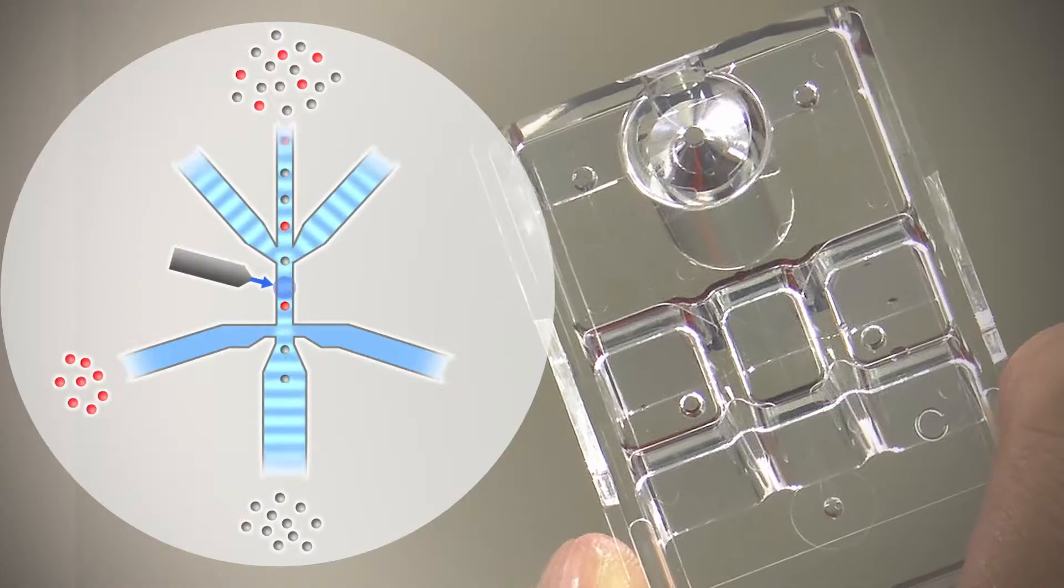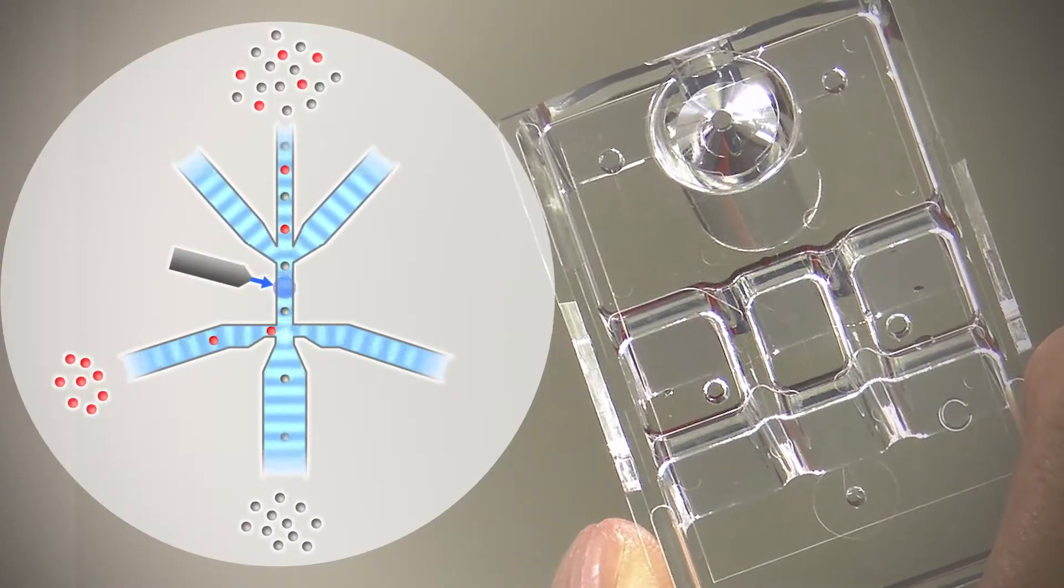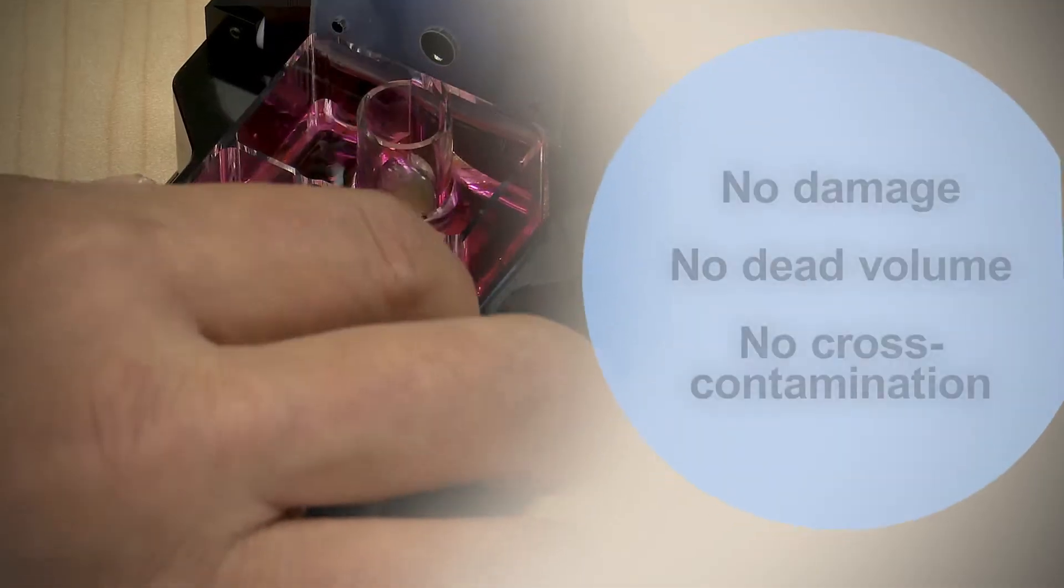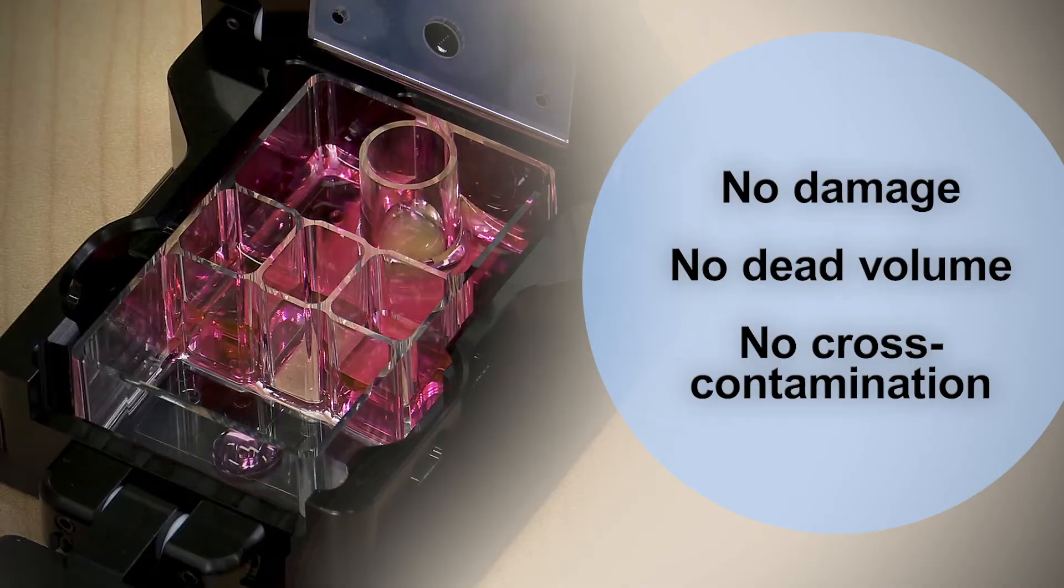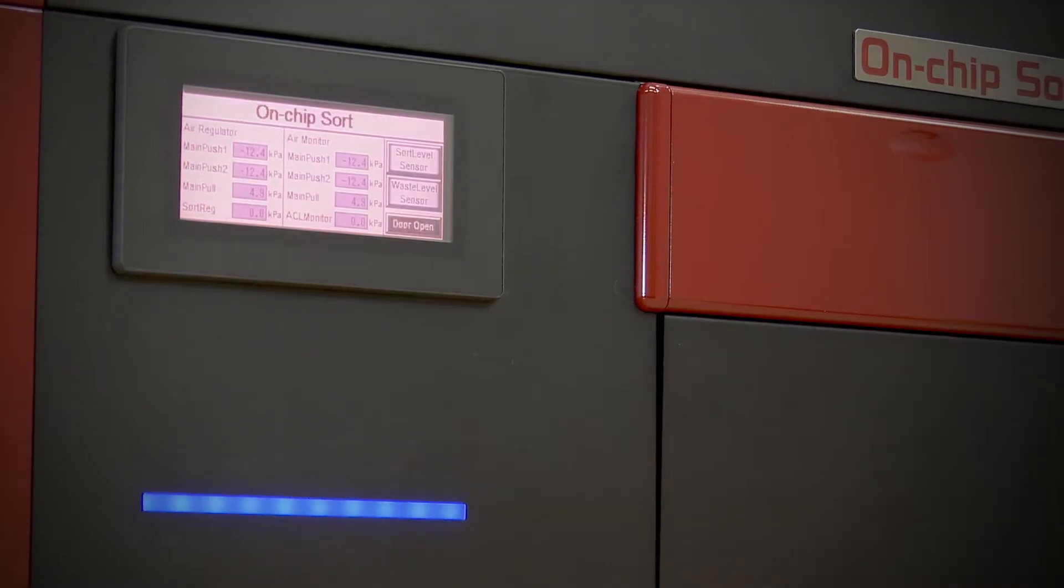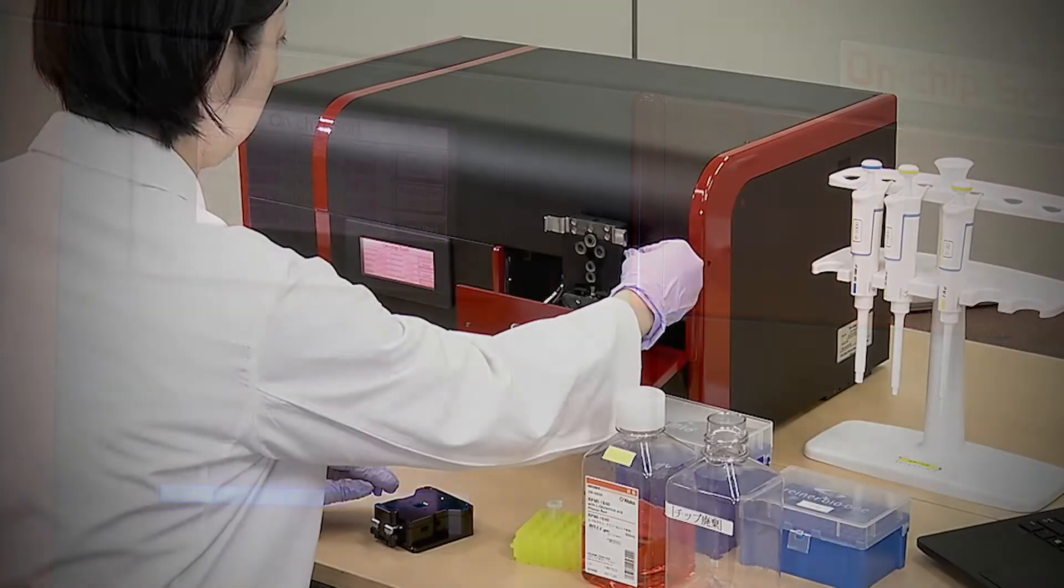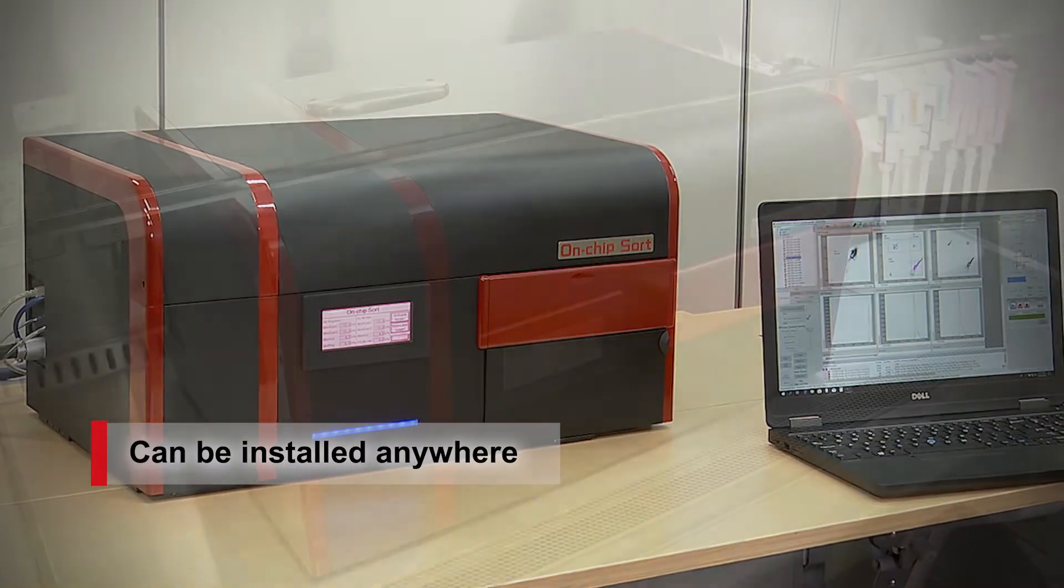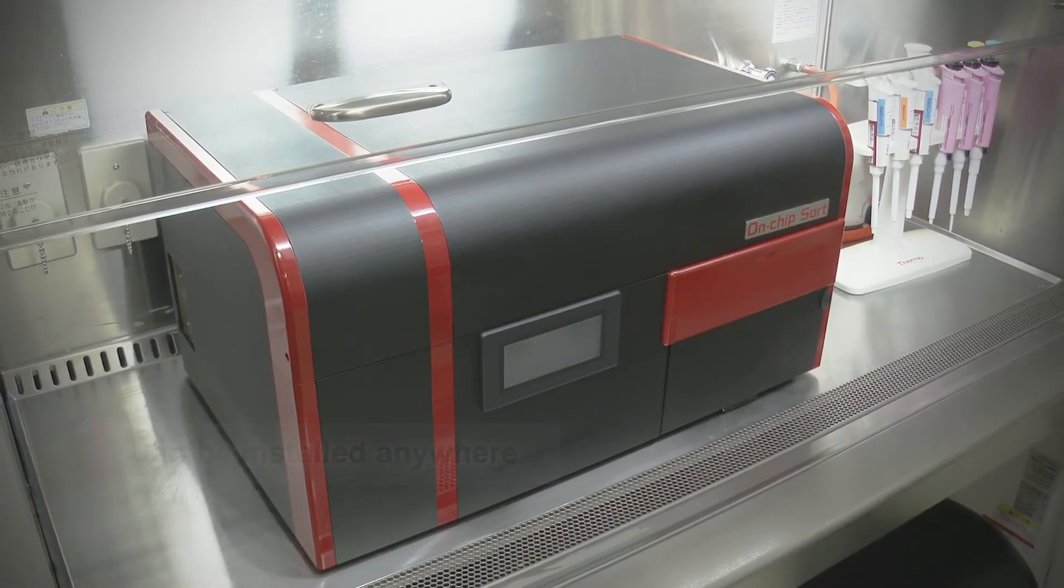On-chip Sort enables contamination-free and damage-free sorting with the use of a disposable microfluidic chip. The entire sample can flow through via pneumatic actuation. The sorter is simple and easy to use. The main unit is very compact and can be installed anywhere, such as on a bench or inside a hood.